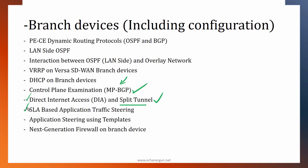We will talk about one of the most important features in software-defined wide area networks: application traffic steering. We can consider the SLA of the transport links in order to steer the traffic of specific applications over a chosen link. If something happens to the SLA of those links, we can automatically switch over to another link. I will show you how to create application steering policies using templates, apply them to multiple devices, and get the benefit of application awareness and steering in Versa SD-WAN.